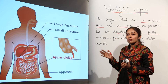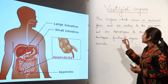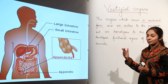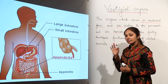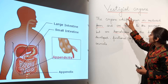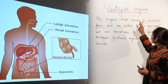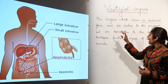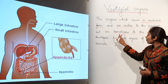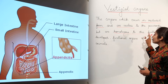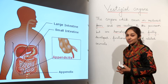If you talk about some related species or related organisms, they show some homologous behavior. Remember, vestigial organs are the organs which occur in reduced form and are useless to the possessor but are homologous to the fully developed functional organs of related animals.